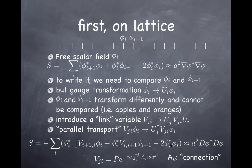A homework problem asks you to show that if you write V_{ji} as the exponential of the line integral of the gauge field from site i to site j, then the lattice action reduces to the covariant derivative of φ in the continuum limit. This reveals the geometric meaning: mathematicians call A_μ a connection, because A_μ is what allows you to connect the variable on site i to the variable on site i+1, enabling fair comparison between fields at different spacetime locations.